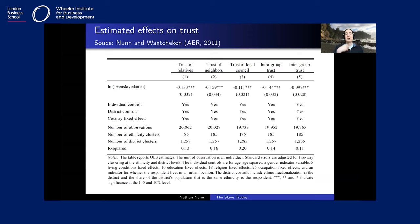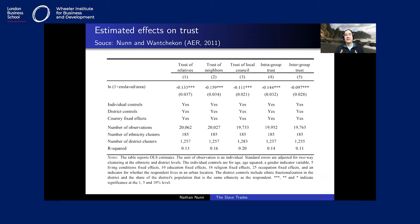What you find is a strong negative relationship between how impacted an individual's ancestors were by the slave trade and their self-reported trust in others. The survey asks about trust in relatives, trust in neighbors, trust of local council, trust within ethnicity, and trust outside ethnicity. One surprising finding was that the effects are larger for trust of those close to you — intra-group trust — than for inter-group trust. Trust in relatives and trust in neighbors showed quite large effects, which makes sense given the historical accounts of family and friends turning on one another.